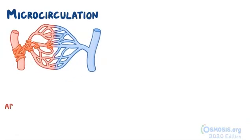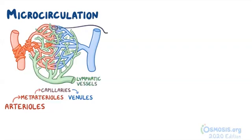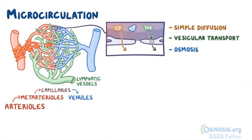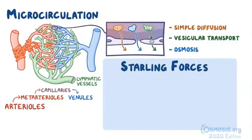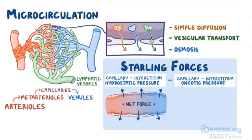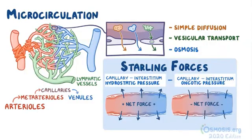Alright, as a quick recap, the microcirculation is made up of the arterioles, metarterioles, capillaries, venules, and lymphatic vessels. And it's in the capillaries where the exchange of substances happen. The exchanges can be through simple diffusion, vesicular transport, and osmosis. Water crosses the capillary clefts with the use of the Starling forces. And the four Starling forces are hydrostatic pressure in the capillary, hydrostatic pressure in the interstitium, oncotic pressure in the capillary, and oncotic pressure in the interstitium. When the net force is positive, water moves out of the capillaries. And when it's negative, water moves into the capillaries.